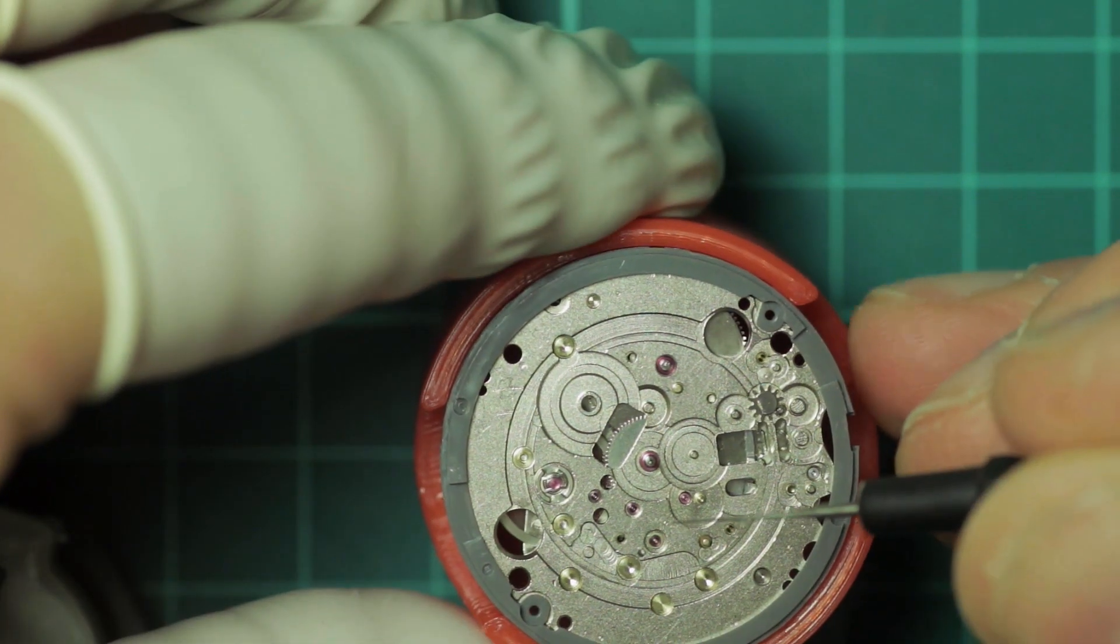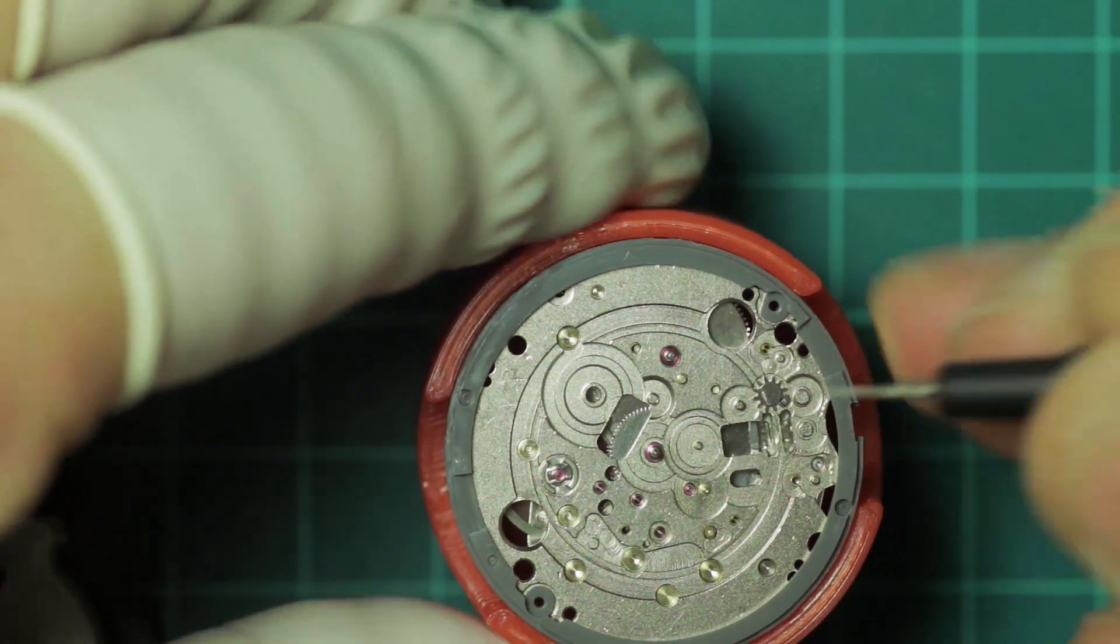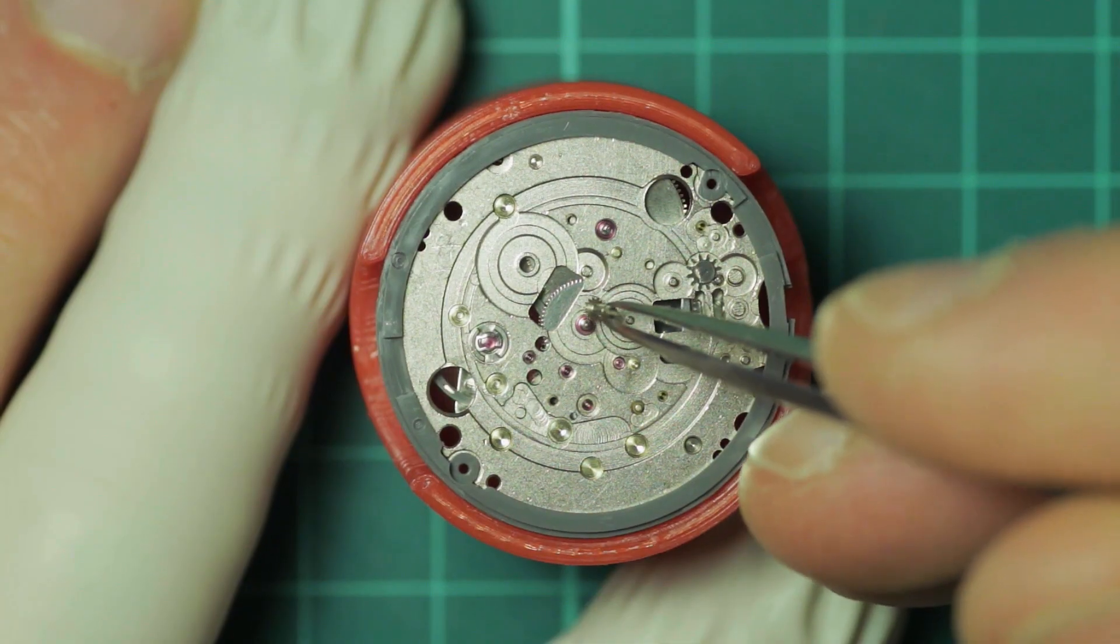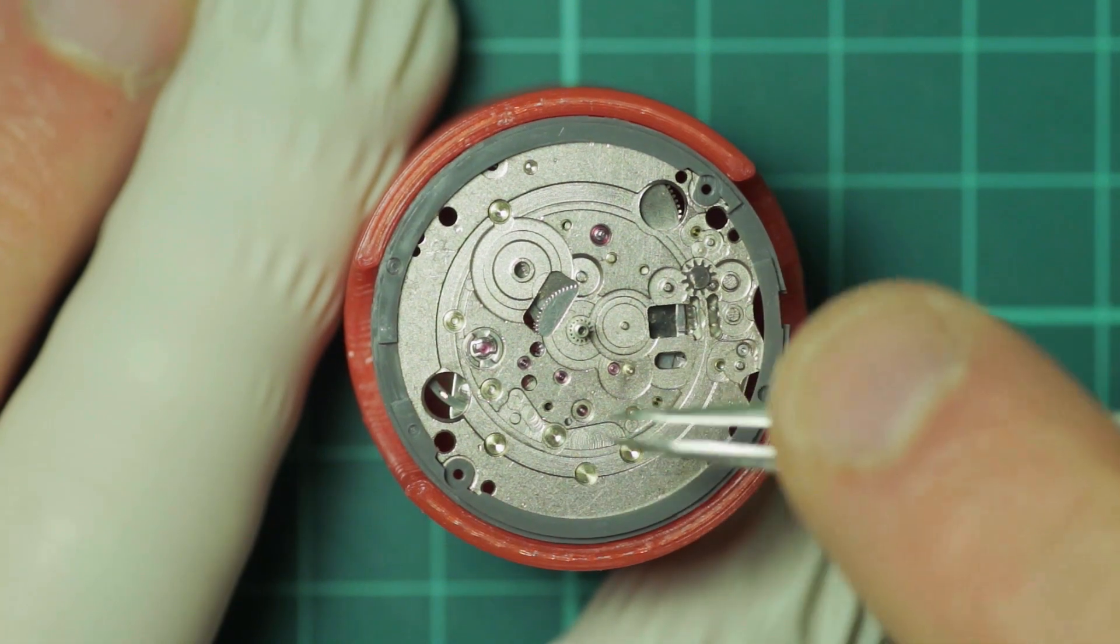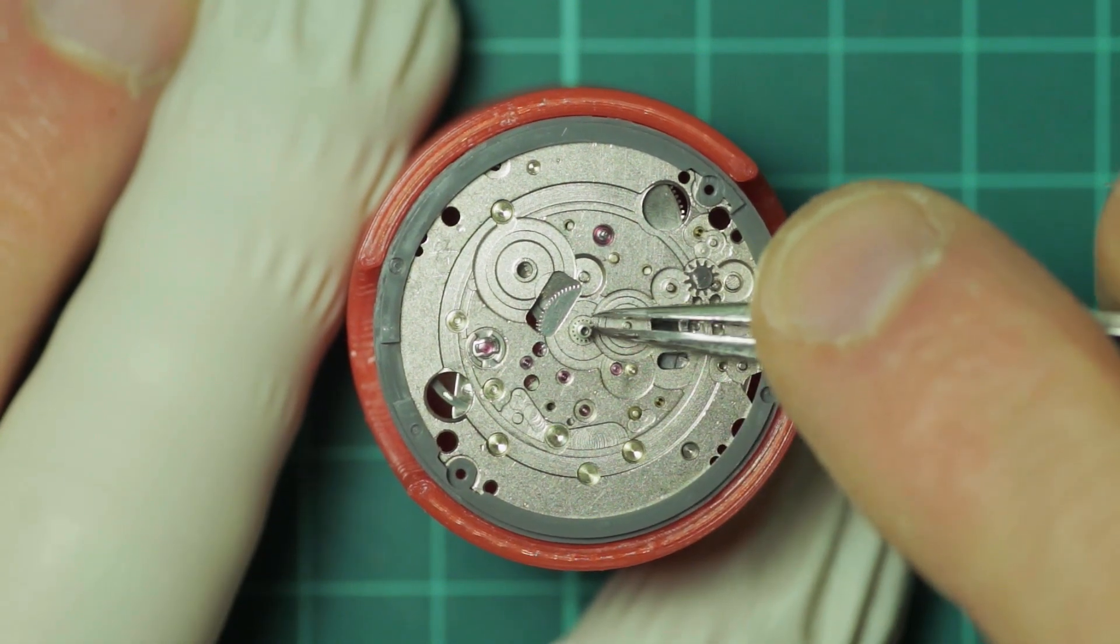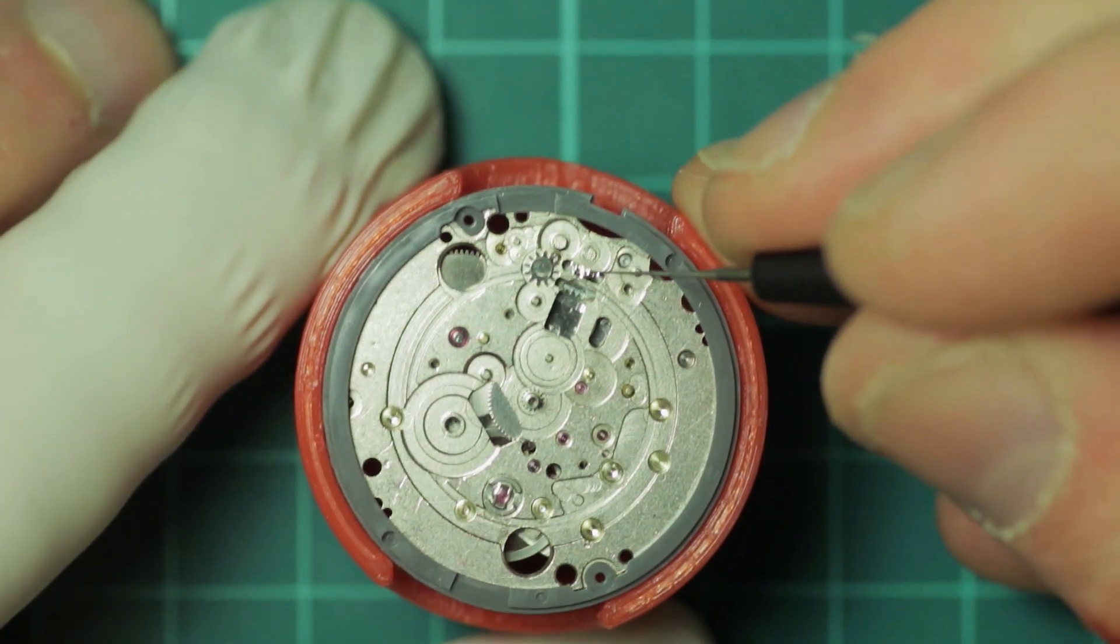And then on to the dial side. The relevant jewels are oiled on the dial side, then the center wheel and the cannon pinion is snapped into place.